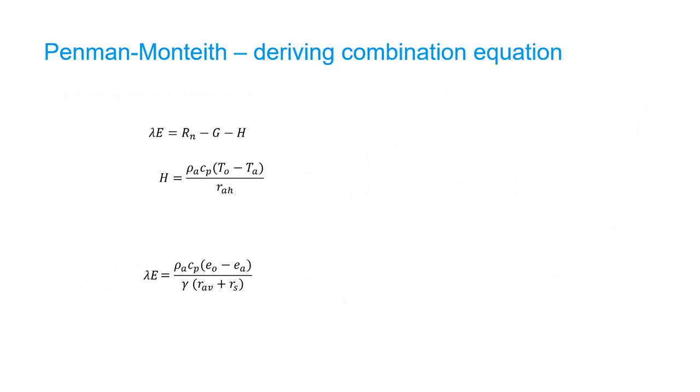The Penman-Monteith method combines these two approaches in a combination equation that can be solved using standard weather measurements only.